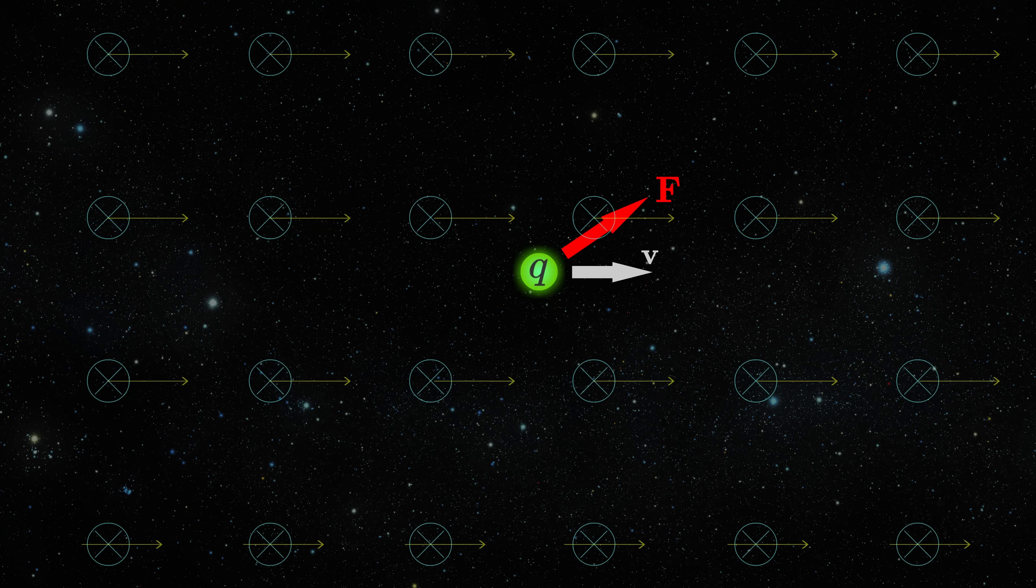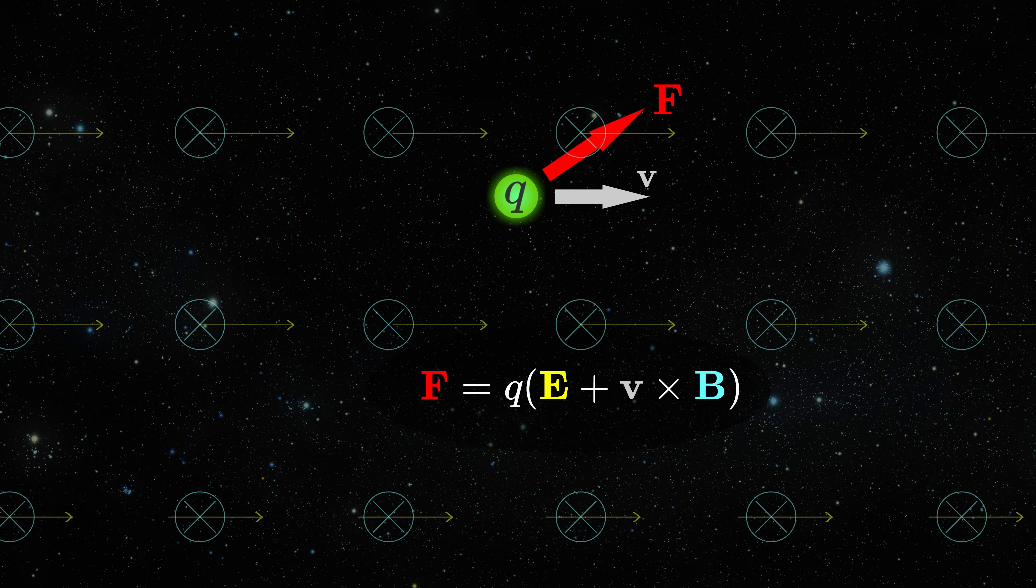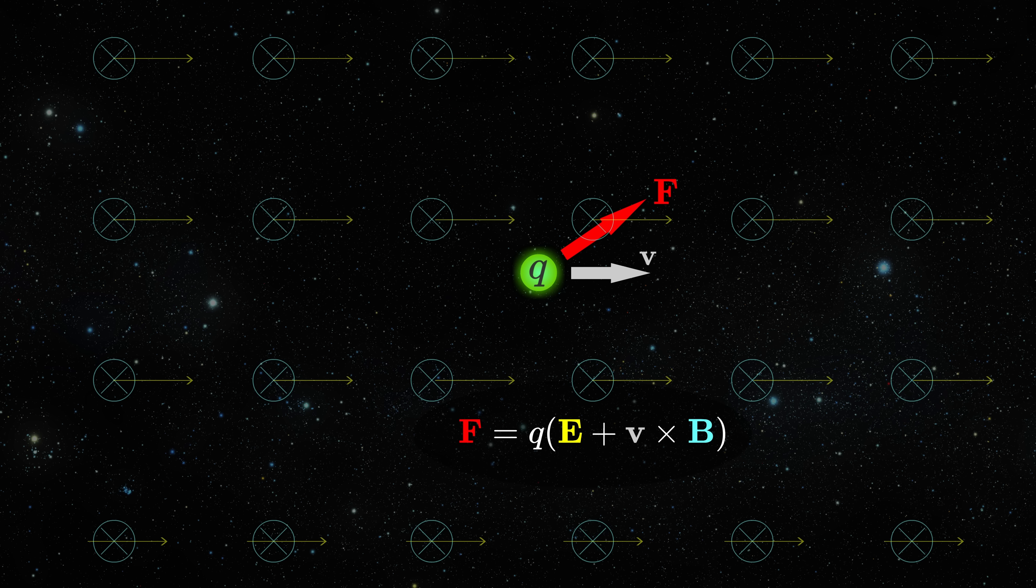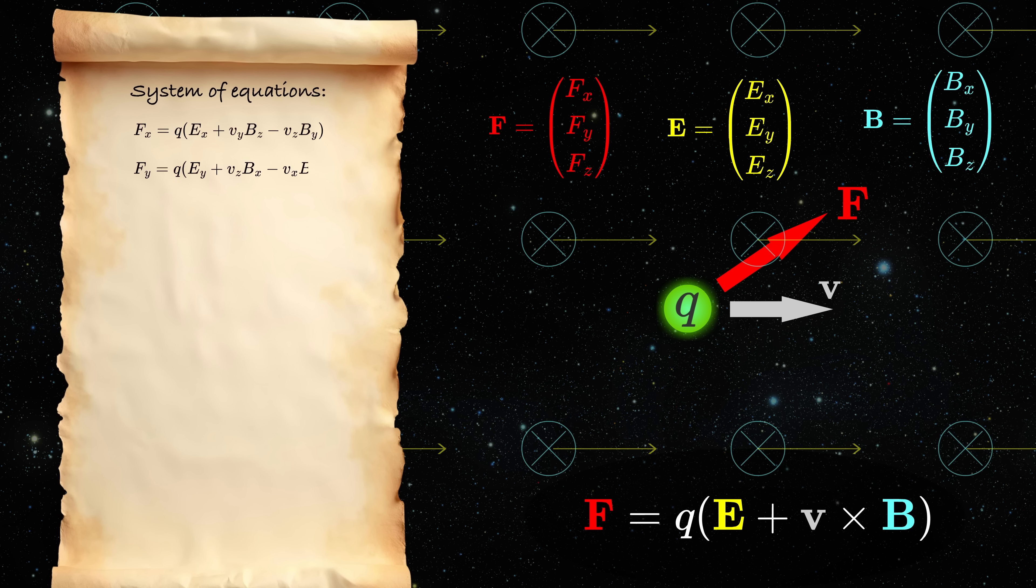And now we arrive at the crux of the problem. The force coming from the electromagnetic field can be written in this unified way, where this part comes from the electric field and the second one comes from the magnetic field. But the force, electric field and magnetic field are vector quantities, and therefore have three components in three-dimensional space. So we can split this vector equation into three equations for each force component.